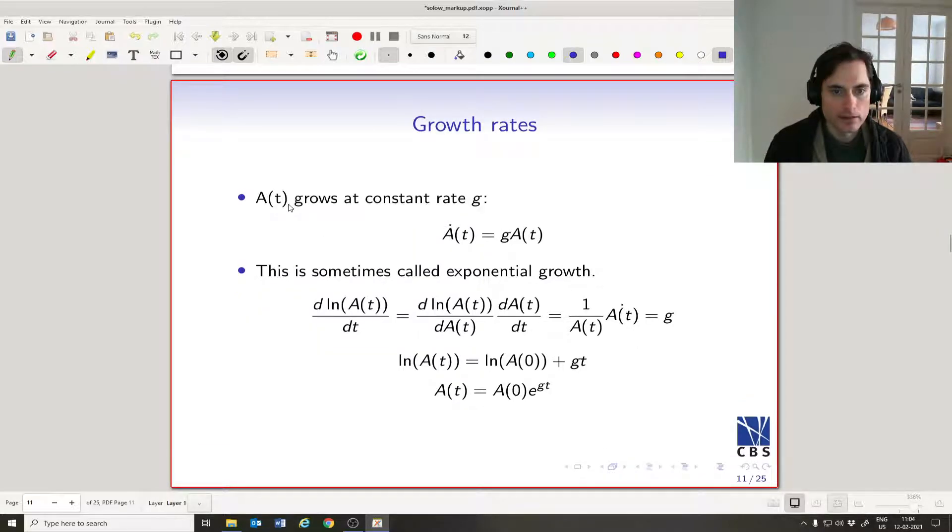So what we mean when we say that A grows at a constant rate g is that the change in A, so now we're introducing some new notation here. This dot notation formally means the derivative of A with respect to t. So we can say here, the derivative of A with respect to t is equal to the growth rate. So I'll put a little, or I'll say it's equal to A-dot.